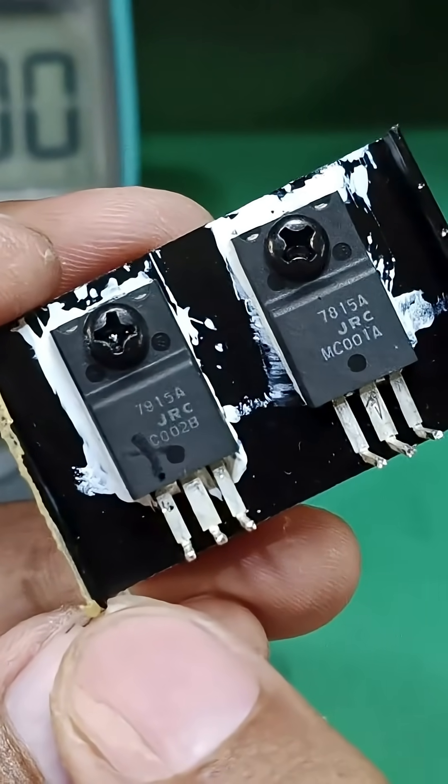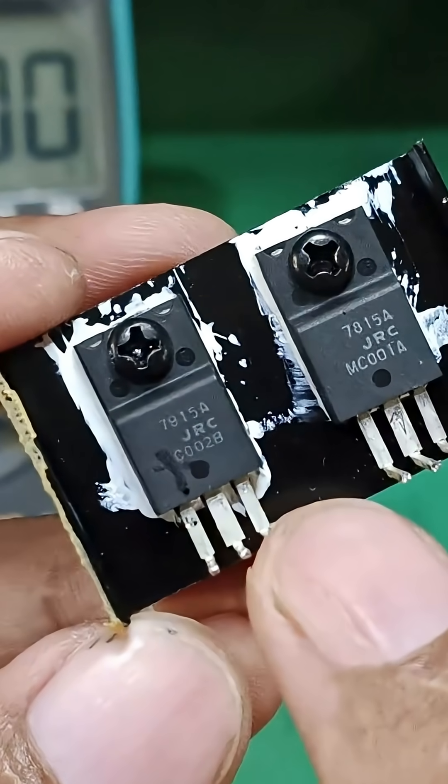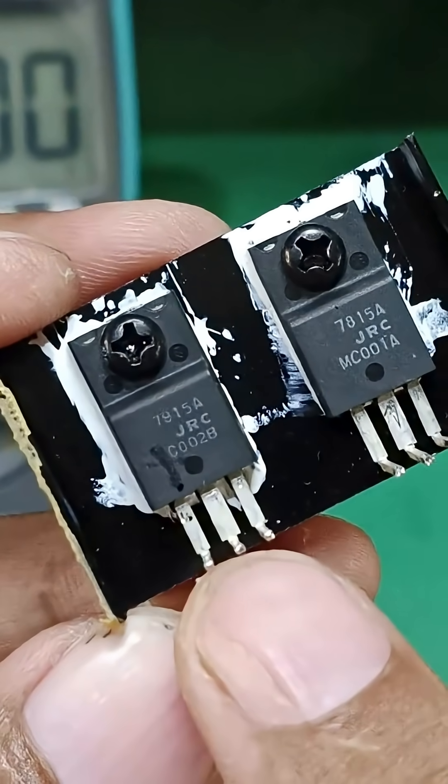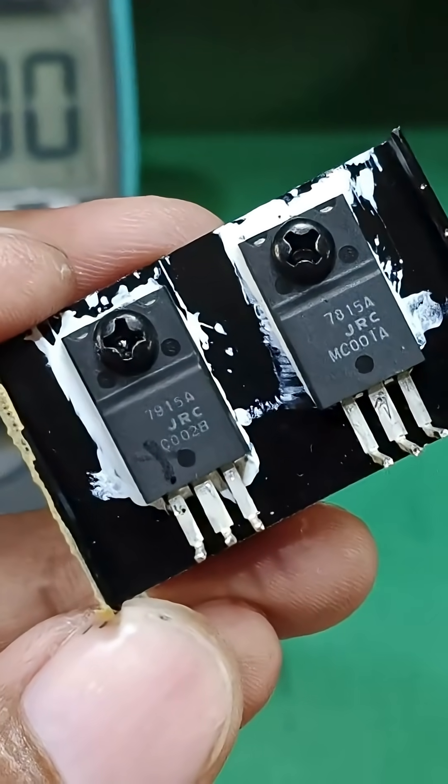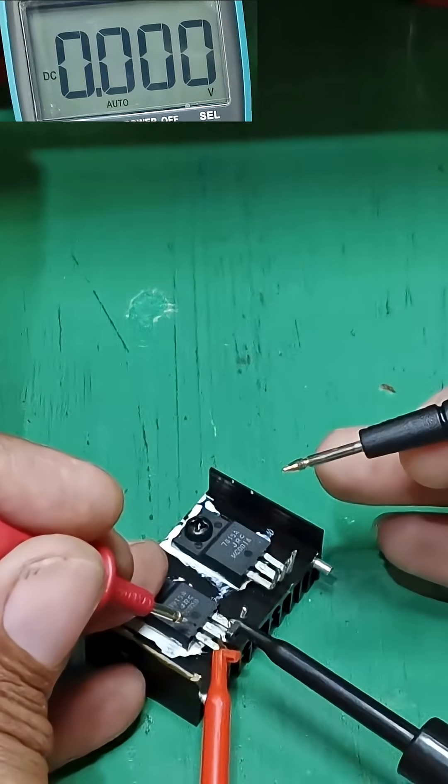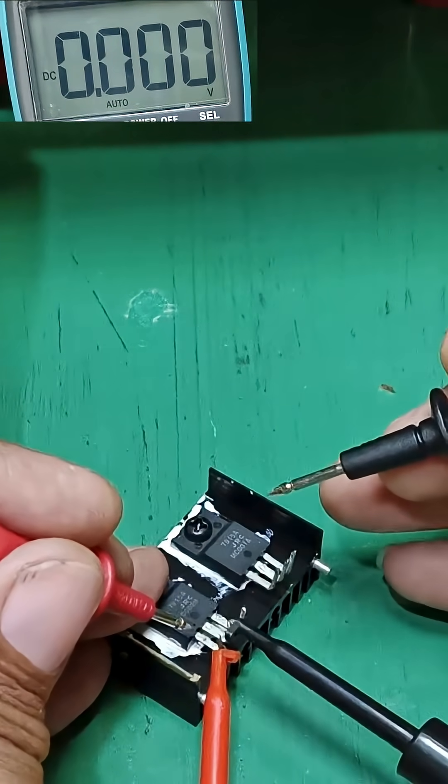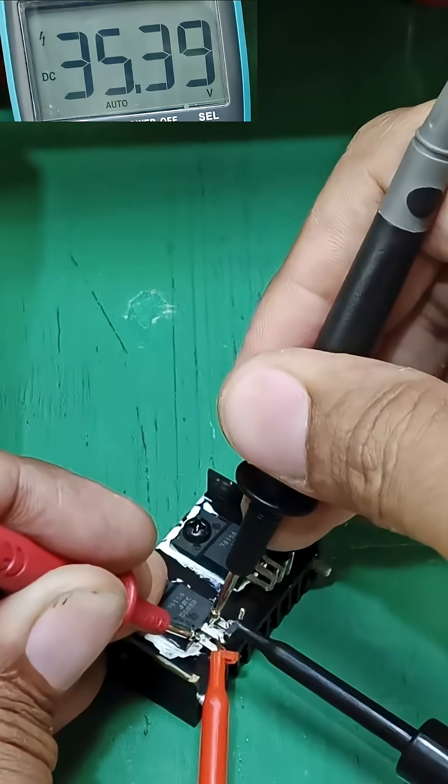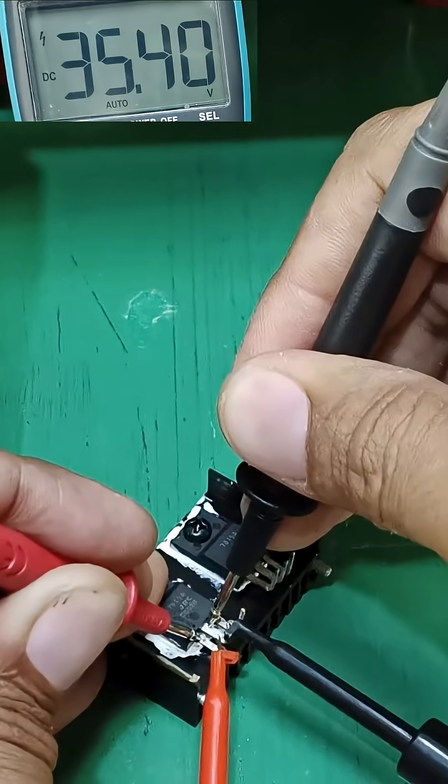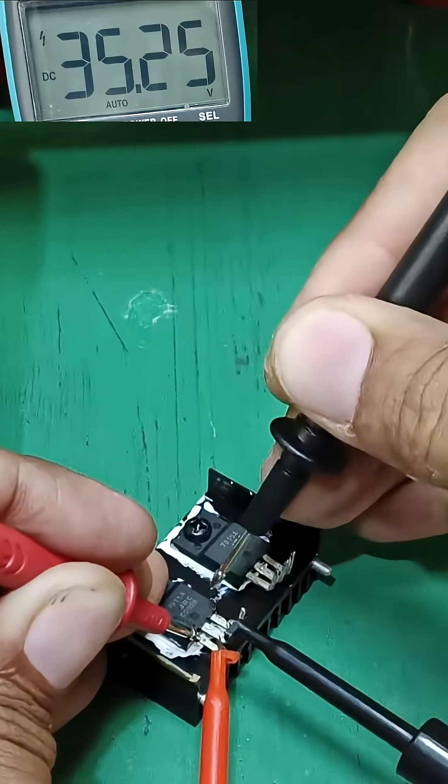The pin configuration is ground, in, out. The ground here is positive, input negative, output negative. Since this is 7915 regulator IC, we expect output voltage negative 15. This is my input 35 volts, my output 35 volts - it means my regulator IC output is not regulated.